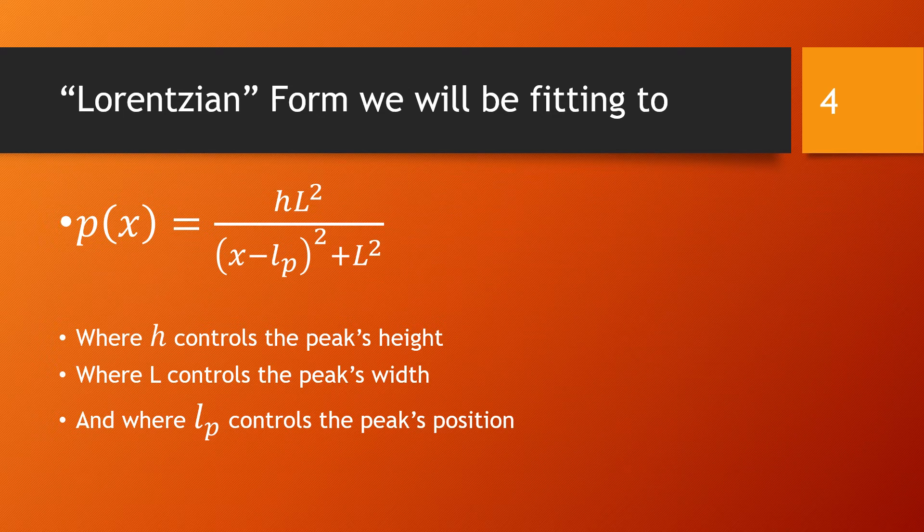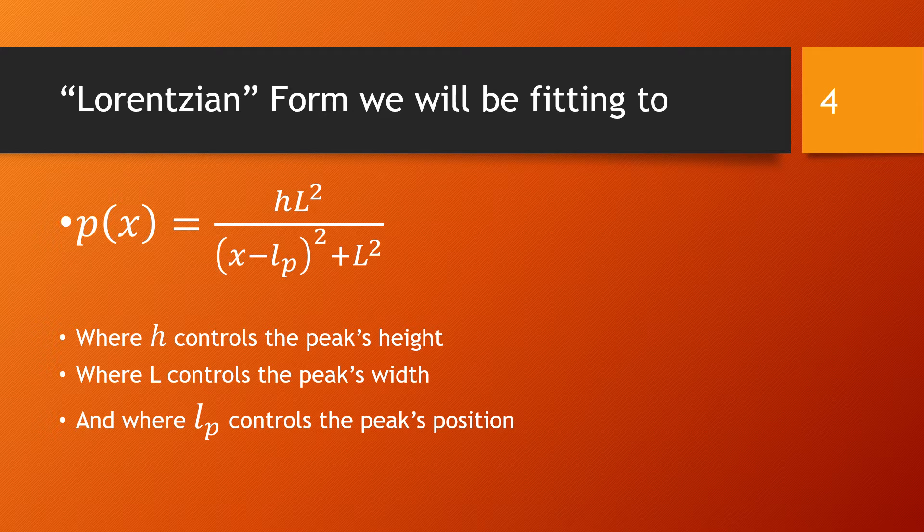We will fit this data to a Lorentzian form with a formula shown, so there are three parameters: h which controls the height of the peak, capital L which controls the width of the peak, and the little lp which controls the position of the peak.